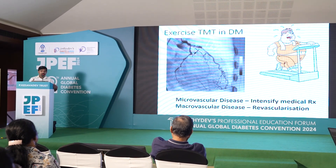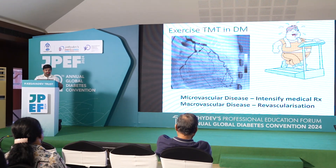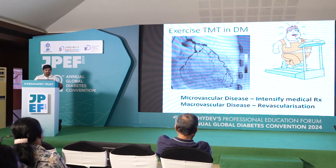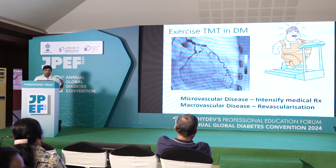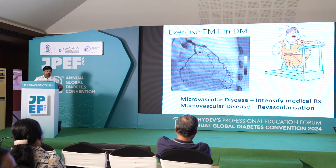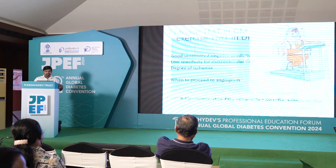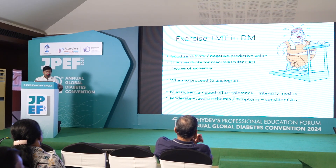Aspirin is more useful and your lipid targets are more intense. If you have macrovascular disease, that is when revascularization may be indicated. But TMT cannot differentiate these two.